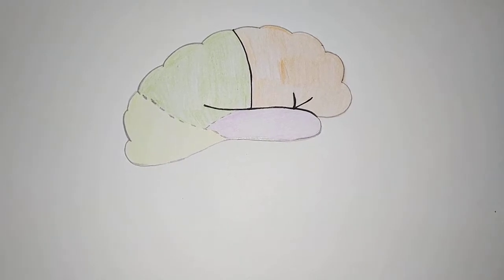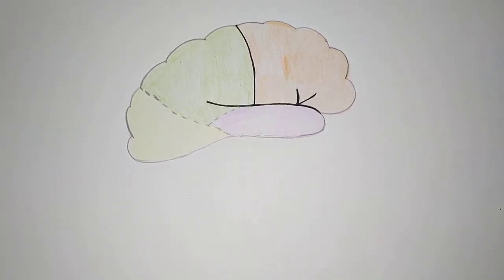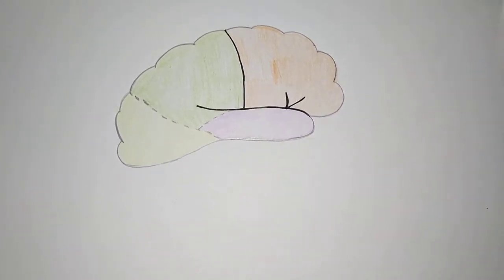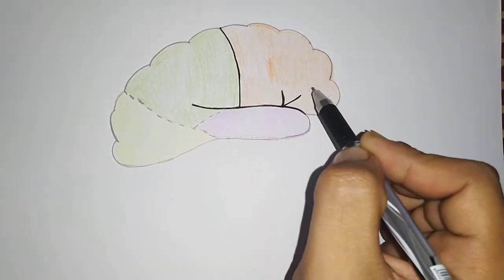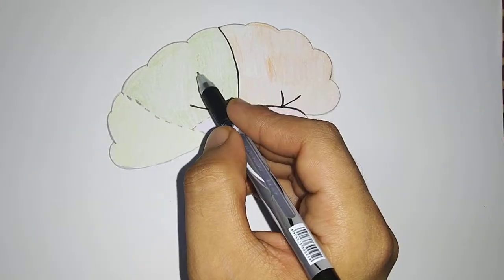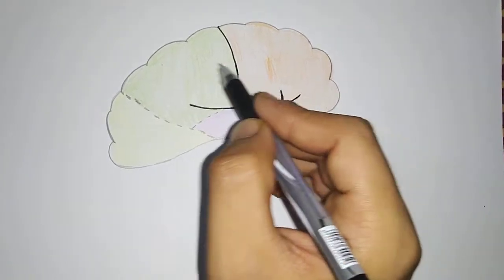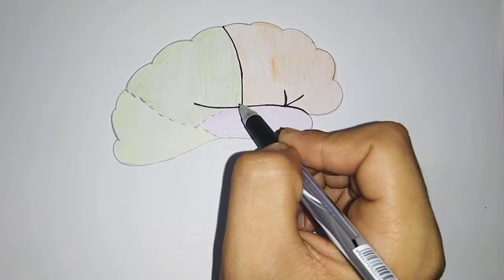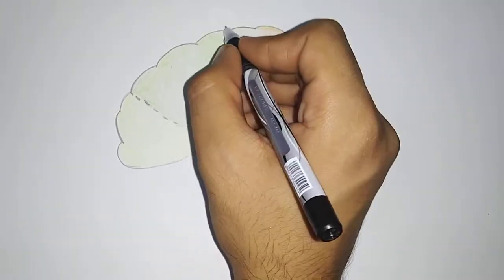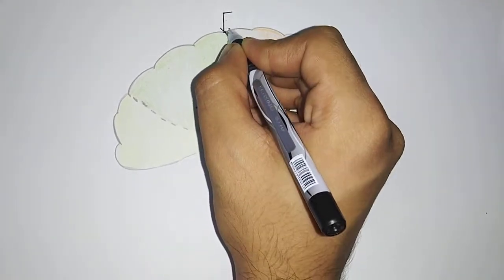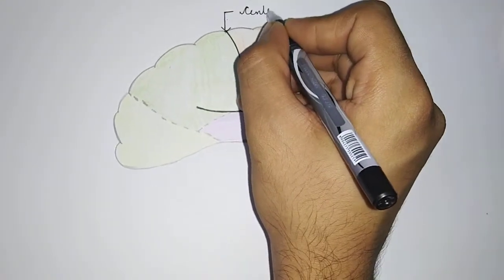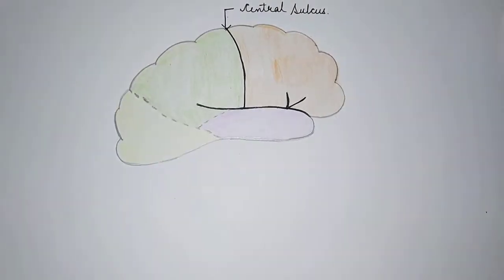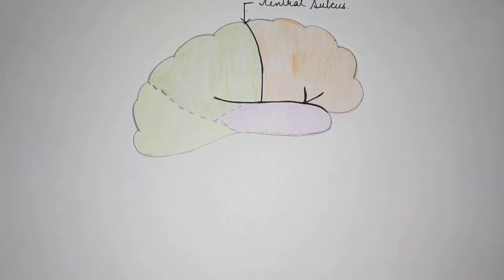We have drawn the superior lateral surface of the right cerebral hemisphere. We are going to explain the frontal lobe and the parietal lobe. The frontal and parietal lobes are separated by the central sulcus, which is the most important sulcus here. Now let's talk about the different sulci present in the frontal lobe.